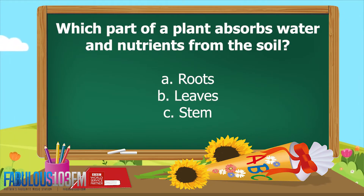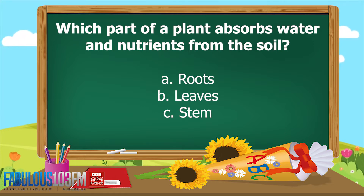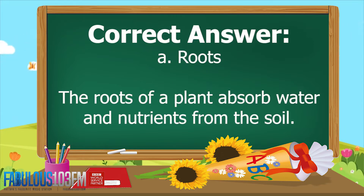Let's look at the two questions I asked you on Friday and see how well you did. The first one was: which part of a plant absorbs water and nutrients from the soil? Is it a) the roots, b) the leaves, or c) the stem? If you answered a) the roots, then you're absolutely correct! The roots of a plant absorb water and nutrients from the soil.